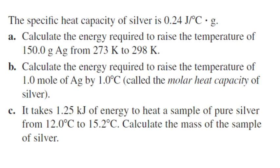Another similar problem involves silver and is pretty much a straight q = mcat calculation using the given c value for silver. One thing worth pointing out is molar heat capacity. Part b asks to calculate the rise in temperature of one mole of AgCl by one degree — you take the specific heat capacity in joules per gram per degree Celsius and figure out how much energy corresponds to one mole by using the molar mass. For silver, that's about 108 grams per mole.